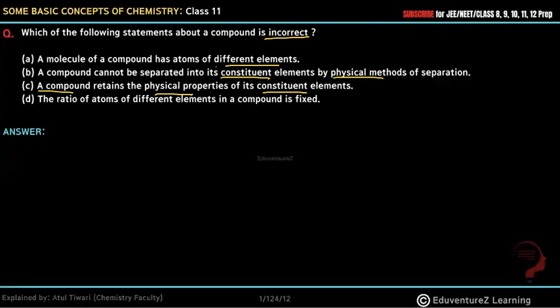Which one is incorrect? Which one is correct? Okay, so first, what is a compound? A compound is a pure substance containing two or more elements combined together in a fixed proportion by mass, which can be separated into its constituent elements by suitable chemical methods.